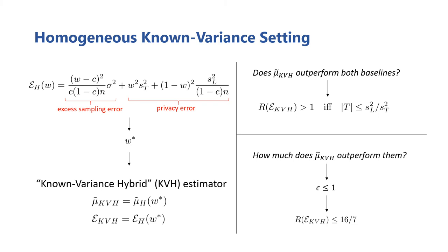The logical next question is, by how much does this estimator outperform the baselines? Analyzing the relative improvement expression, we find that it's theoretically unbounded. However, we're more interested in its performance for practical scenarios, for example, when using the Laplace mechanism to ensure differential privacy in the high privacy regime, where epsilon is less than 1.